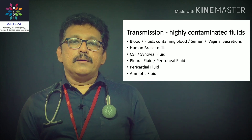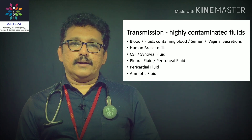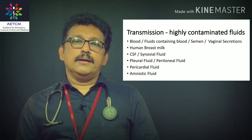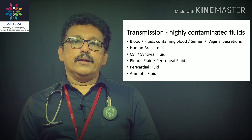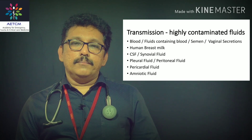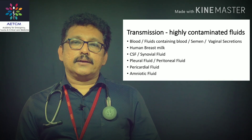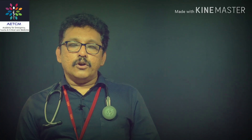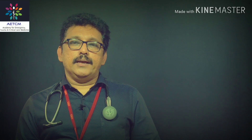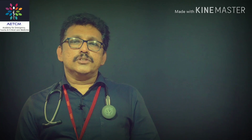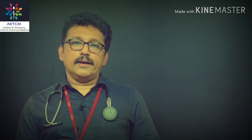The main contaminating fluids in a patient's body include blood, fluids contaminated with blood, semen, vaginal secretions, human breast milk, cerebrospinal fluid, synovial fluid, pleural fluid, peritoneal fluid, pericardial fluid, and amniotic fluid. Blood and all body fluids can transmit HIV from one person to another — and not only HIV, but also Hepatitis B and Hepatitis C can be transmitted through blood and blood products.